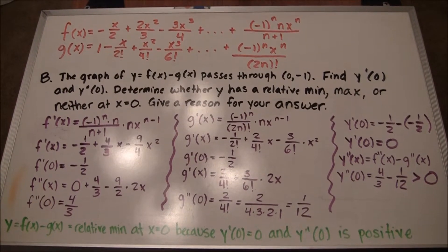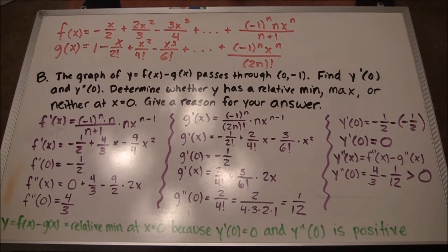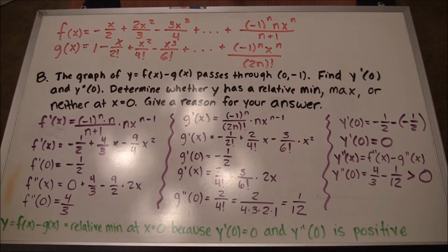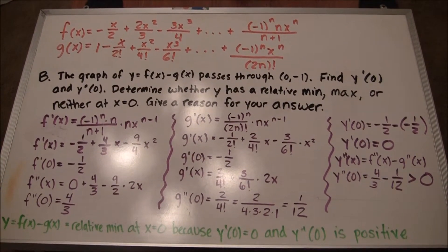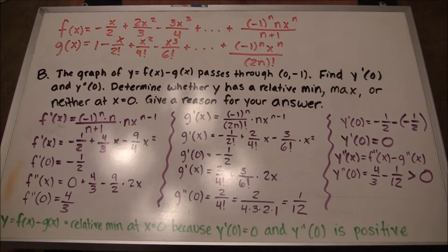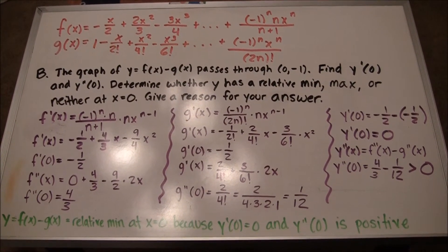Part B of this question says, the graph of y equals f of x minus g of x passes through the point 0, negative 1. Find y prime of 0 and y double prime of 0. Then determine whether y has a relative minimum, a relative maximum, or neither at x equals 0, and give a reason for your answer.